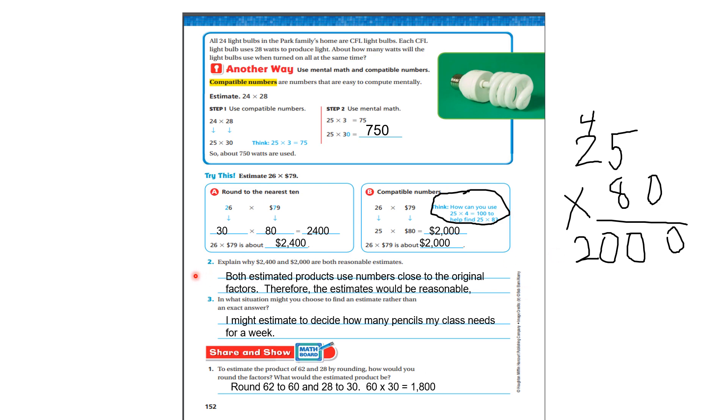Let's look at number two. Explain why 2,400 and 2,000 are both reasonable estimates. Well, they're both estimated products that use numbers close to the original factor. So therefore the estimates would be reasonable.